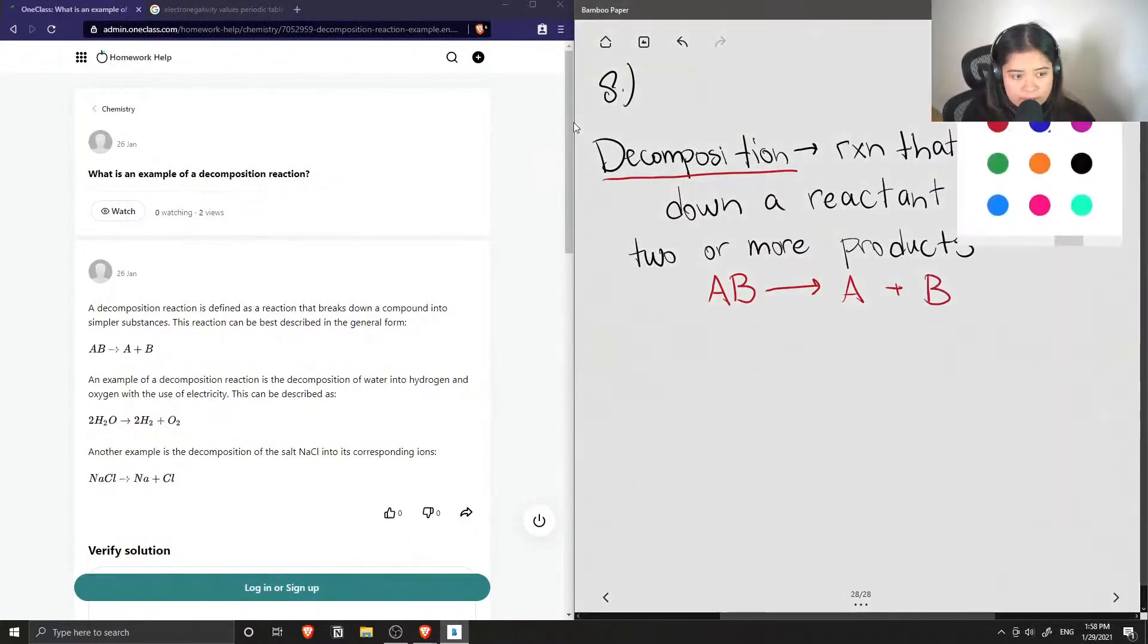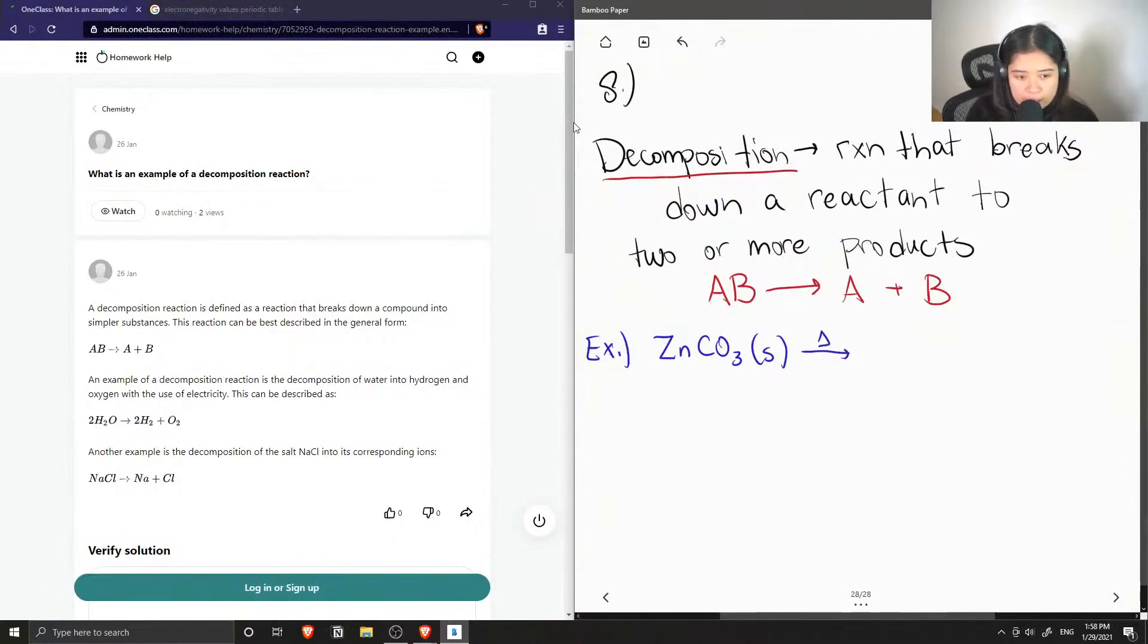Okay, so I'll also add some real life examples. So let's say we had zinc carbonate and if this was exposed to heat, then it can break down to zinc oxide plus carbon dioxide gas.